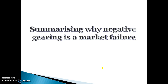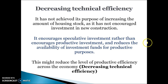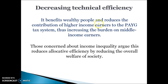When summing up why negative gearing is a market failure, explain what it is, explain what it intended to do — boost the supply of housing — but it hasn't fulfilled that purpose because not much new housing stock has been created. Most people are buying existing houses and therefore not putting money into more productive areas. In terms of technical efficiency, rather than investing in new capital or new businesses, money is going into old houses which is not creating jobs or production. This reduces productive efficiency across the economy and also reduces government revenue available to provide services.